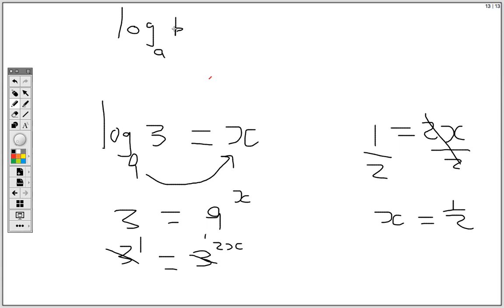The change of base formula is just saying we can change the base A to any base that we desire. So we have log in the numerator and log in the denominator and C represents the base that we want. Then we put the B in the numerator and then A in the denominator. So this is called the change of base formula where C represents the base that we want, B in the numerator and A in the denominator.